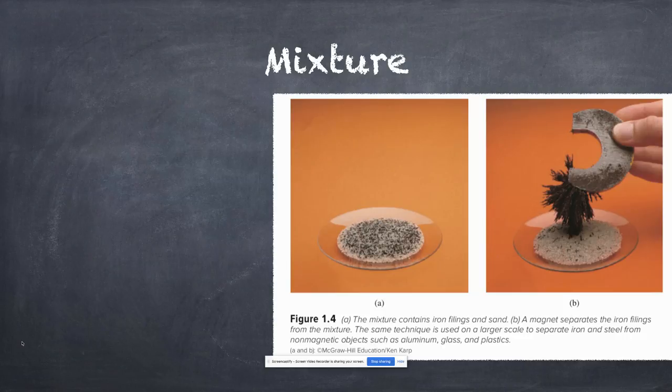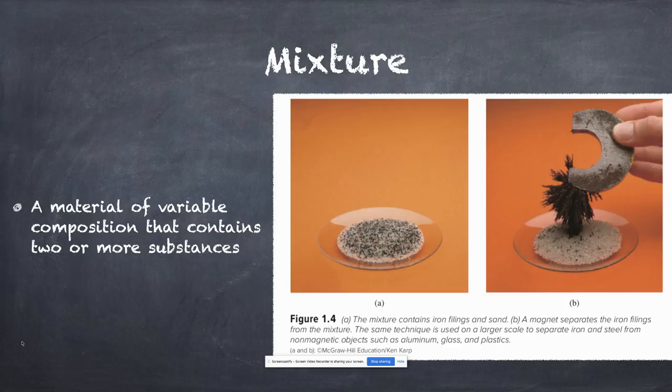Mixtures. This is an outstanding photo to talk about mixtures. That's a mixture of iron filings and sand. A mixture is a material of variable composition that contains two or more substances. It's important to know those substances maintain their chemical properties. There are ways to separate mixtures. In this case, we did it with a magnet. We pulled the iron filings out of the mixture just by running a magnet over it. This is not uncommon to do as a lab.